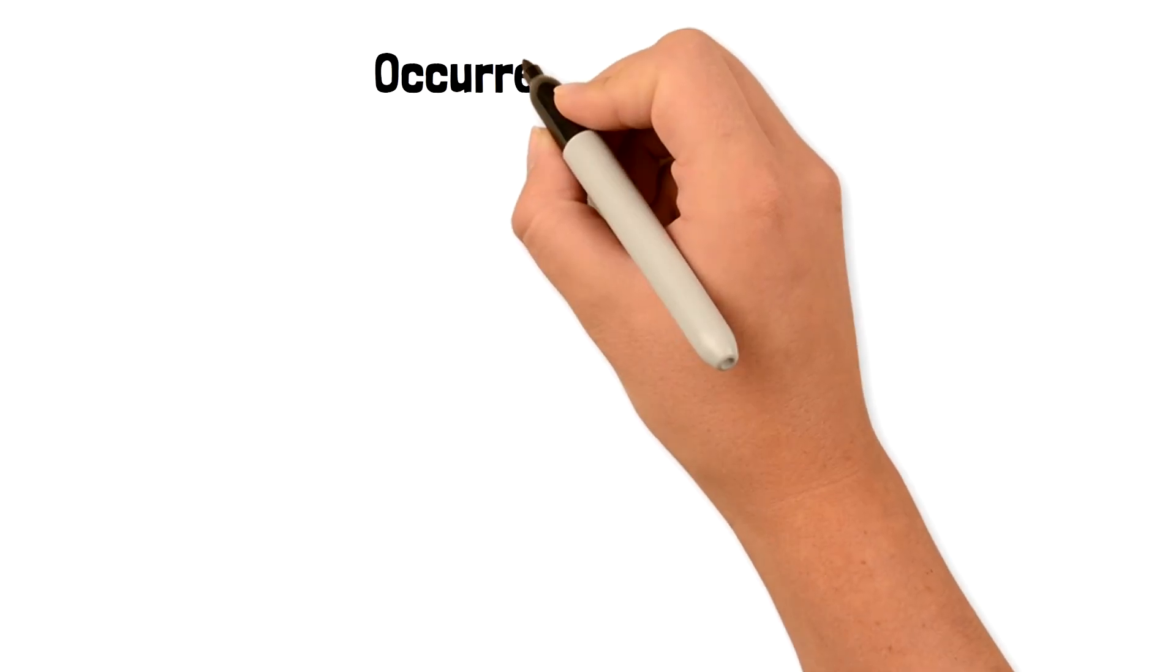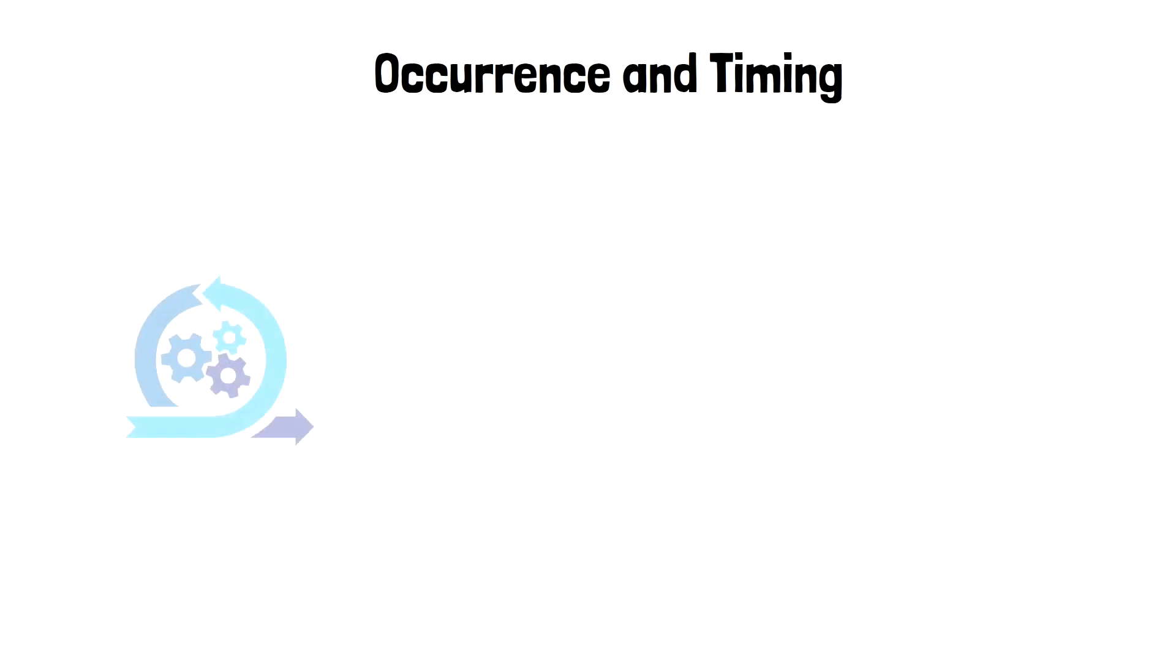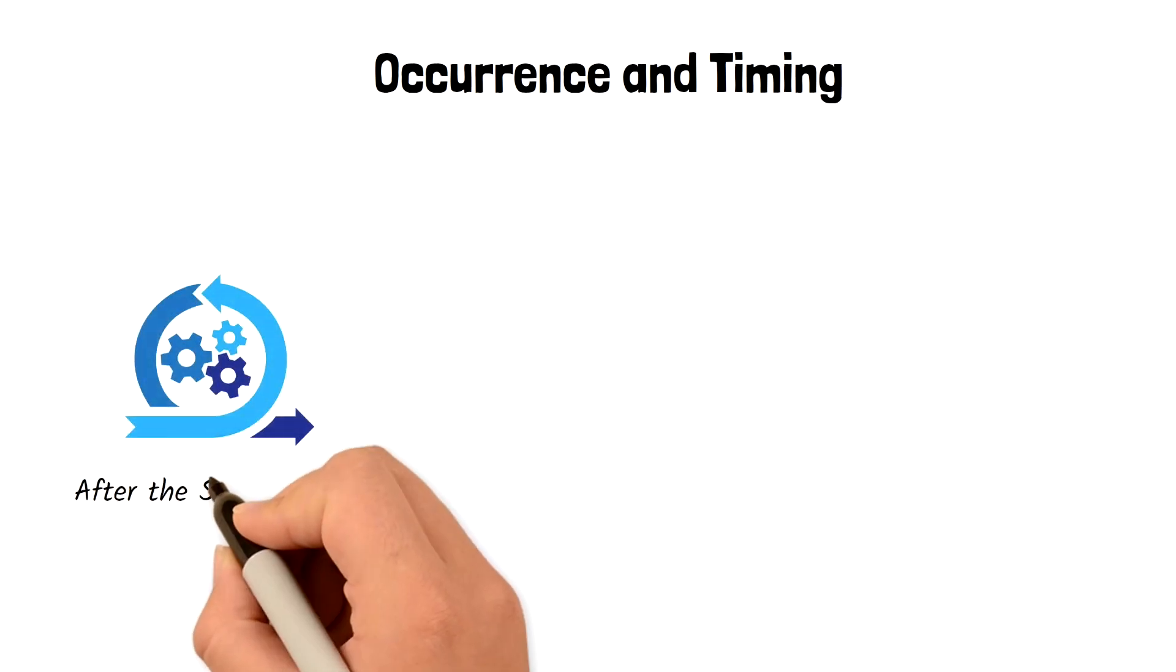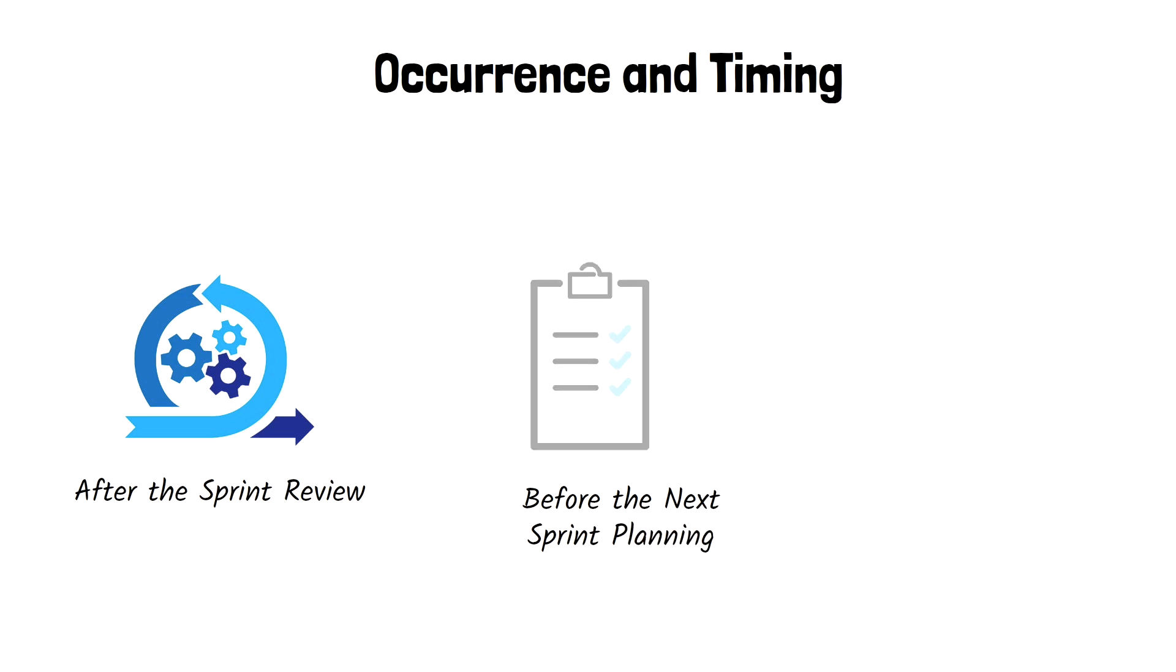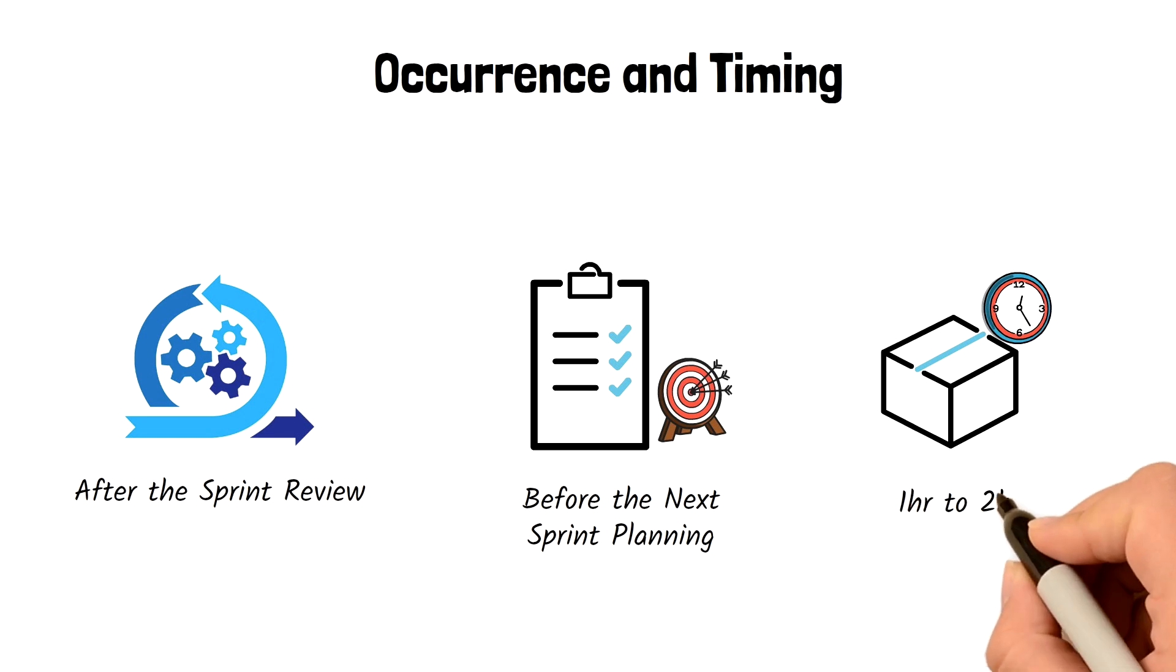Let's look at the occurrence and timing of the Sprint Retrospective. This activity frequently occurs after the Sprint review and before the next Sprint planning. The Sprint Retrospective concludes the Sprint and it's usually a time-boxed one or two-hour session, depending on the Sprint length.